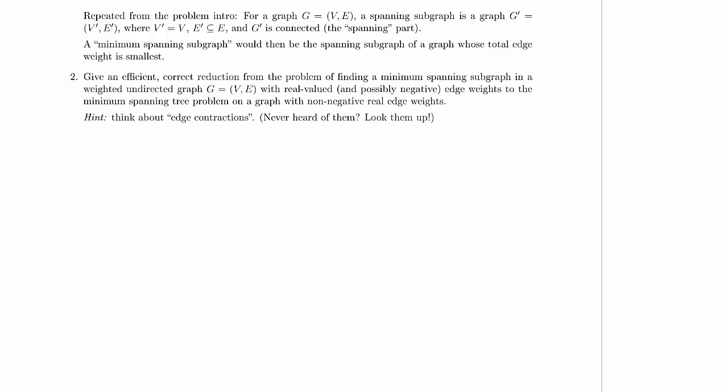We're still on problem 4, part 2 now, and I've repeated a bit of the intro since we'll need it. Give an efficient, correct reduction from the problem of finding a minimum-spanning subgraph in a weighted undirected graph with real-valued and possibly negative edge weights to the minimum-spanning tree problem on a graph with non-negative real edge weights.